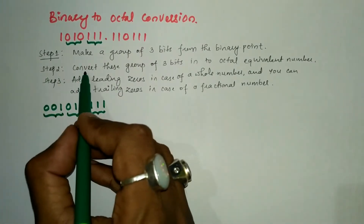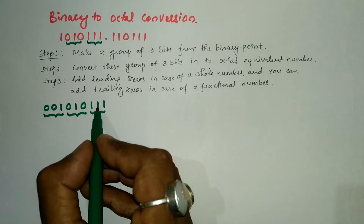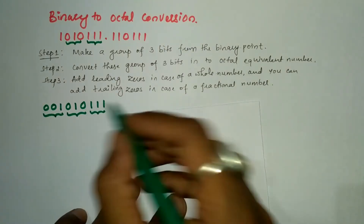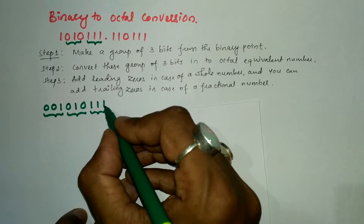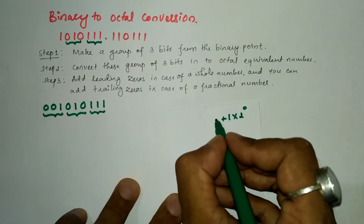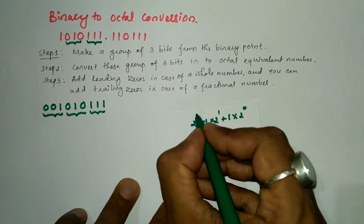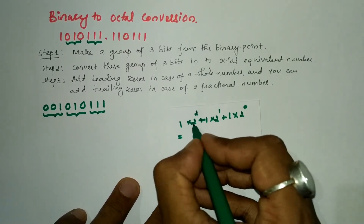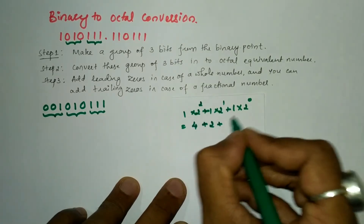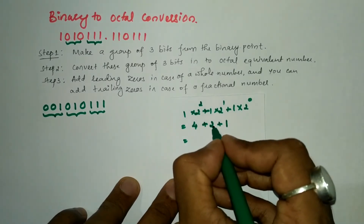Step two says convert these groups of three bits into the octal equivalent. For the group 1, 1, 1: the positional weight of the rightmost 1 is 2 to the power 0, plus the next 1 at 2 to the power 1, plus the next 1 at 2 to the power 2. So 4 + 2 + 1 = 7. Therefore, 1, 1, 1 represents 7.